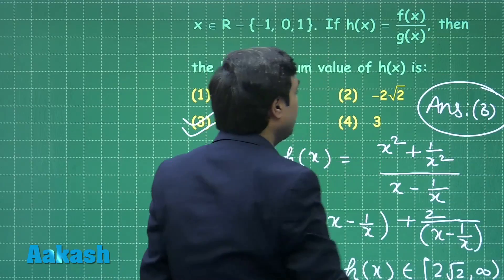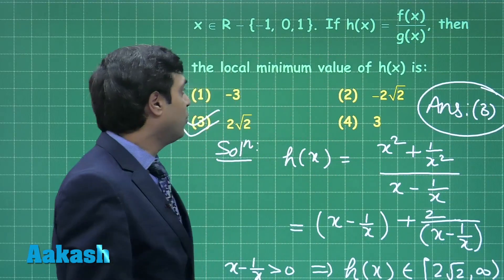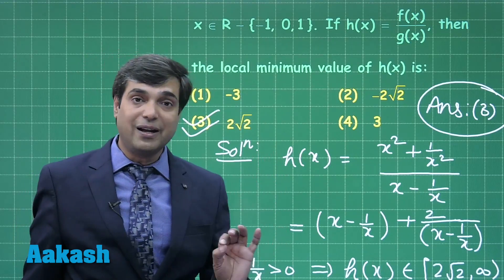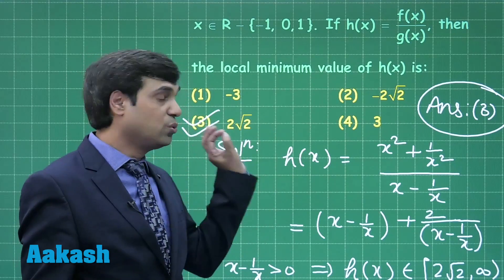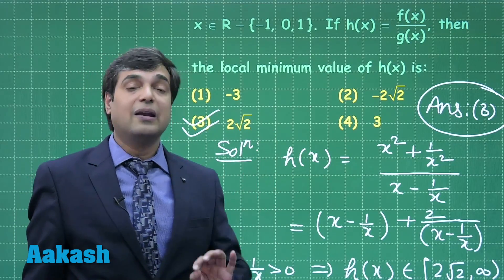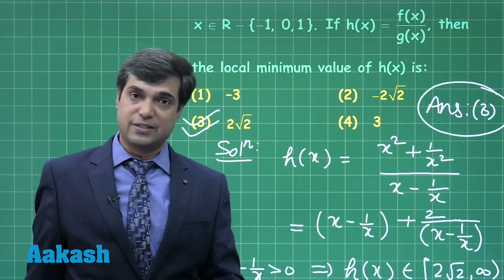The local minimum is obtained as 2√2. This is clear. Let us move to the next question.